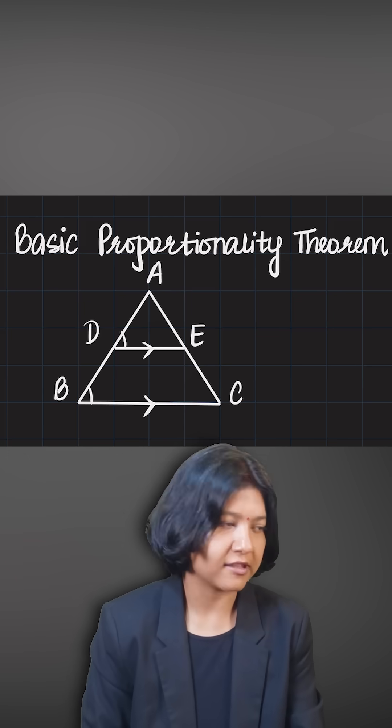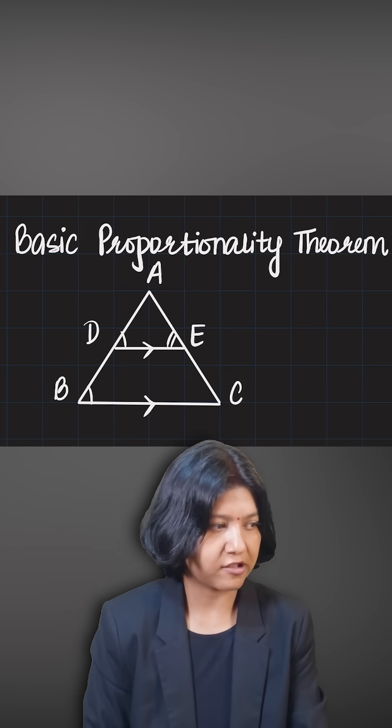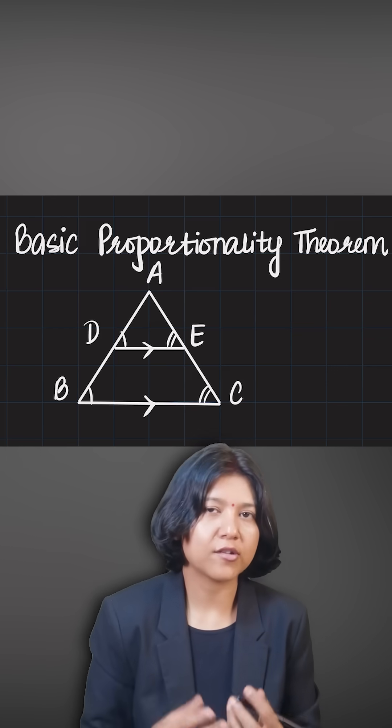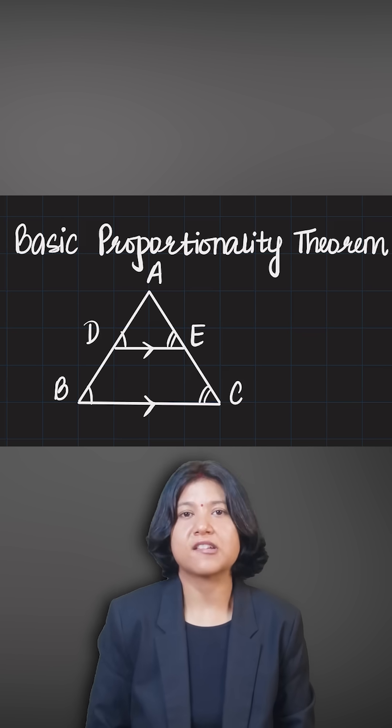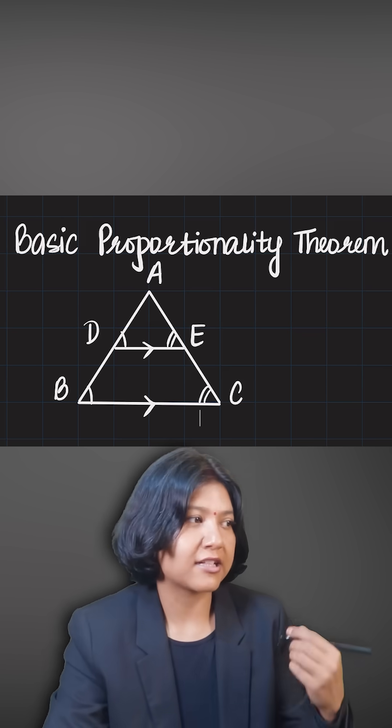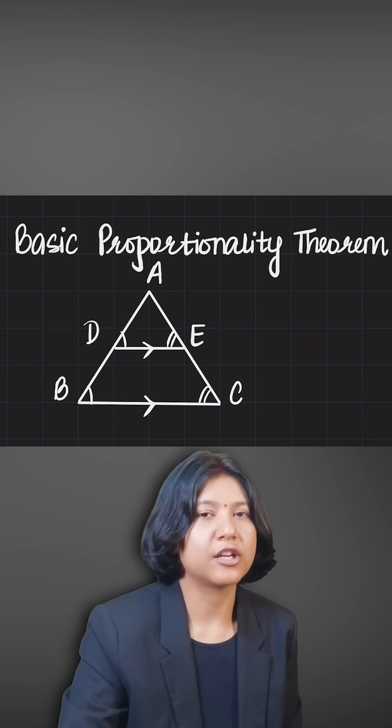Angle D and angle B are correspondingly equal. So these two are again corresponding angles and they will be equal. In these two triangles, because they are similar, they will have the same ratio for the sides.